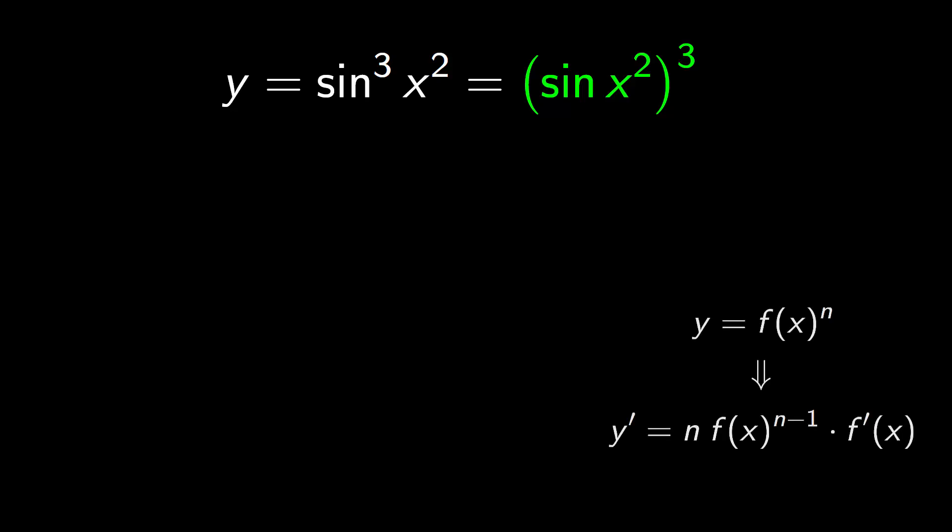Then we have to apply the formula for the derivative of a function raised to a number, which appears on the right. Thus this derivative would be the 3 goes in front. Now the sine of x squared will be raised to 3 minus 1 and applying the chain rule times the derivative of the inside.